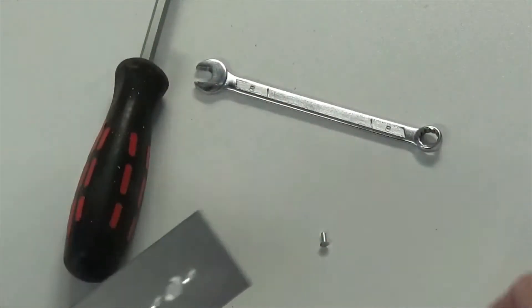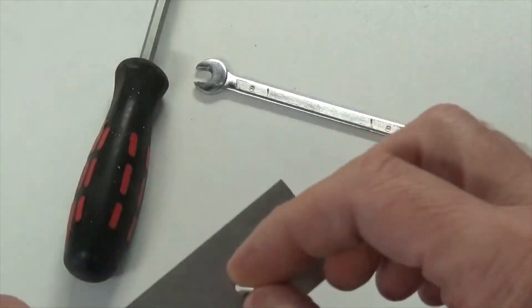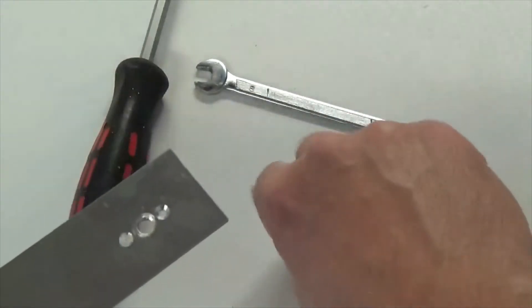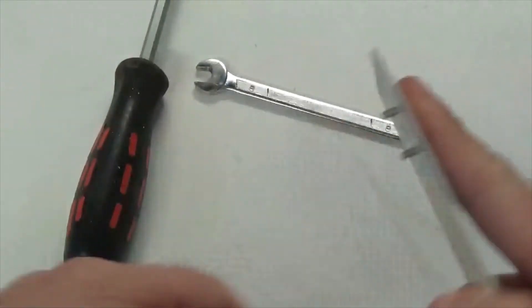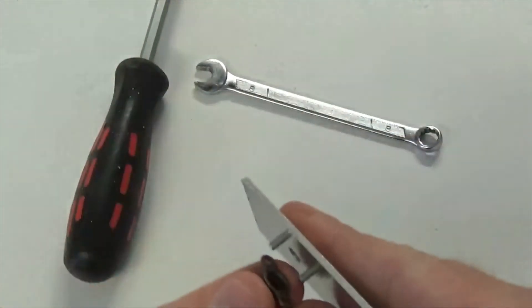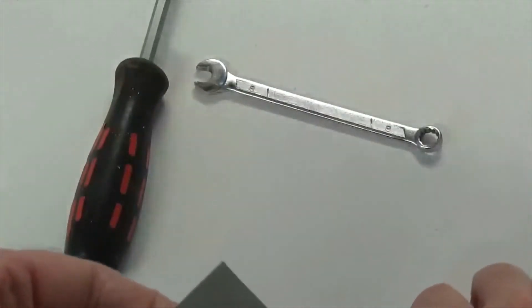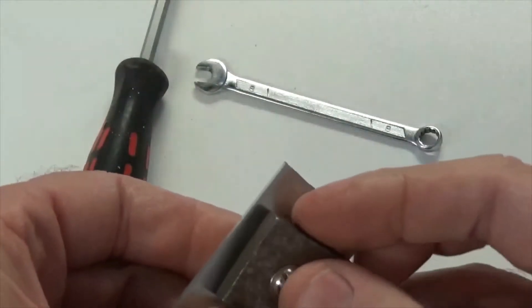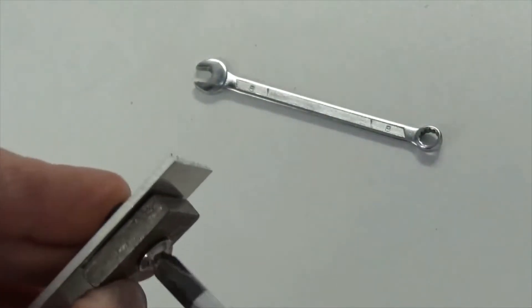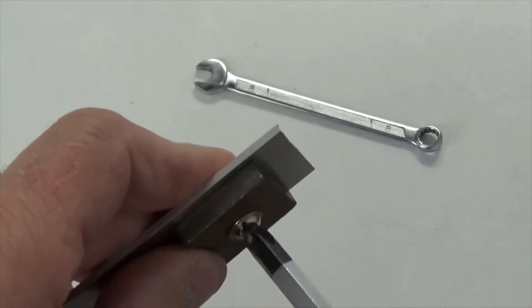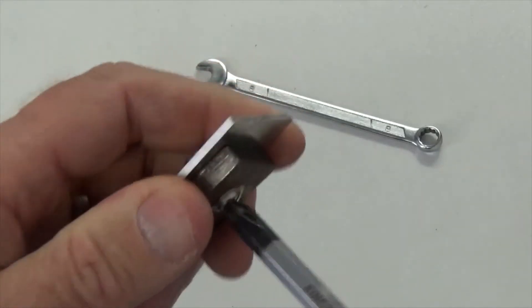and you put your rivets in the countersinks, put your anchor nut over, hold it all in place, and do your bolt or your screw up like that. Nip it up tight.